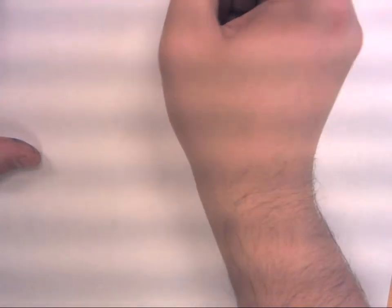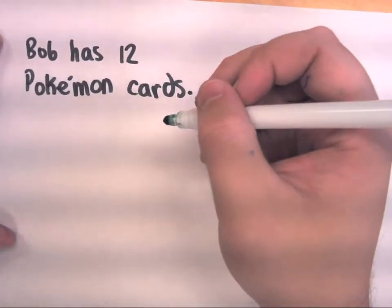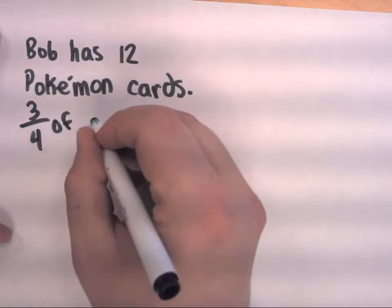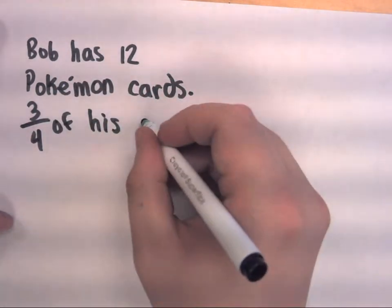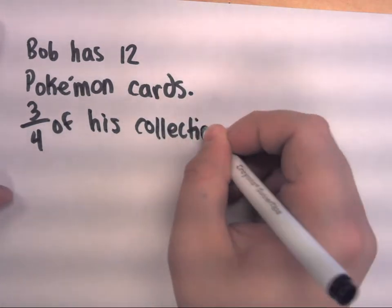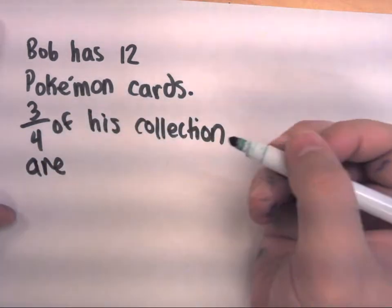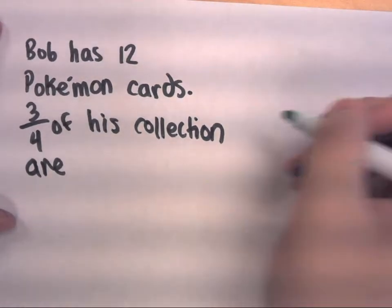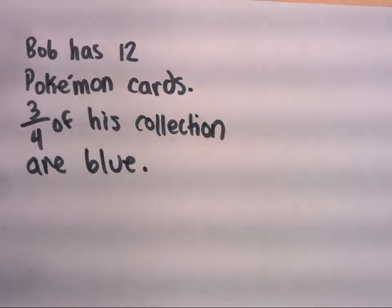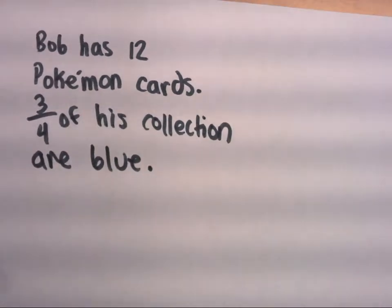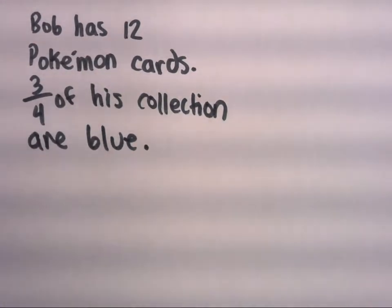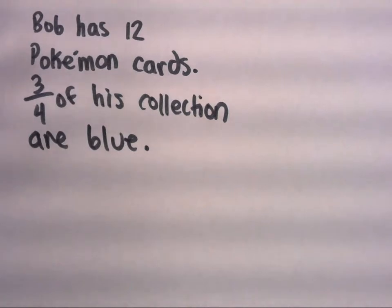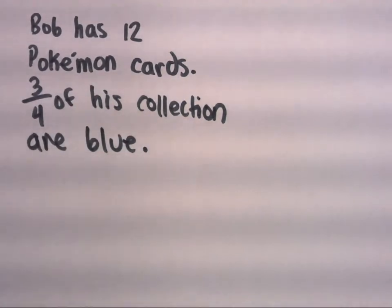We'll say Bob has 12 Pokemon cards. And we'll say that 3/4 of his collection are blue. I probably have some kids watching this going, man, this guy has no idea about Pokemon cards. And they would be true or correct. I know very little about Pokemon. But anyway, Bob has 12 Pokemon cards. 3/4 of his collection are blue.